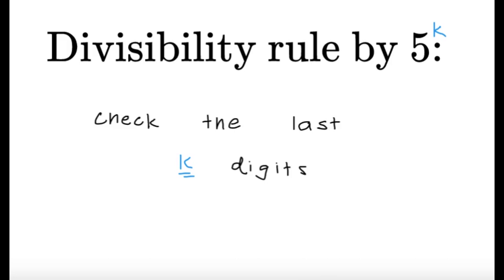If it's divisibility rule by 25, we check the last 2 digits. That's pretty much the same thing, by the way, for the divisibility rule by 2 raised to k. You also just check the last k digits.